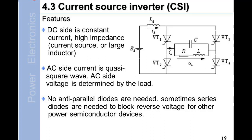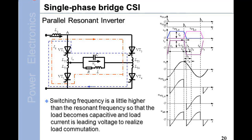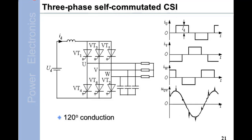No anti-parallel diodes are needed. Sometimes series diodes are needed to block reverse voltage for other power semiconductor devices. Single-phase bridge CSI. Parallel resonant inverter: switching frequency is a little higher than the resonant frequency so that the load becomes capacitive and load current is leading voltage to realize load commutation.